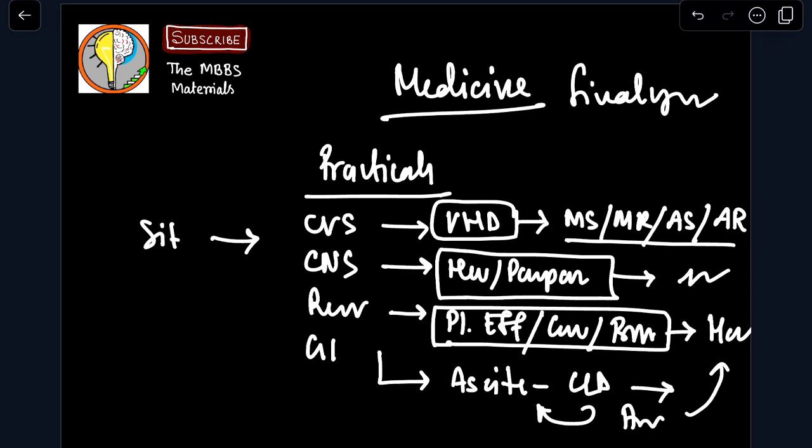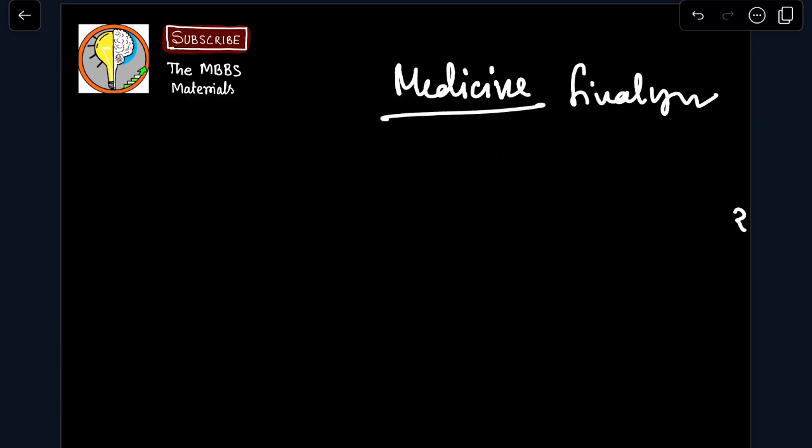So this way, at first you segregate your practicals topics. Then you read from Arup Pundu. Then you go for Harrison and read the topics. This way you can complete your practicals.